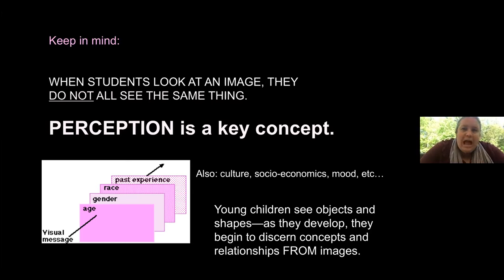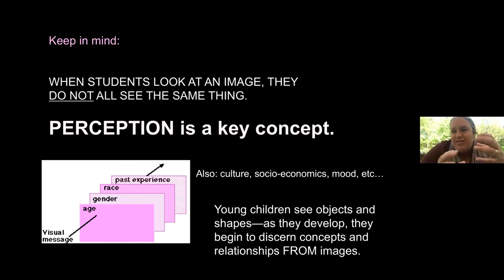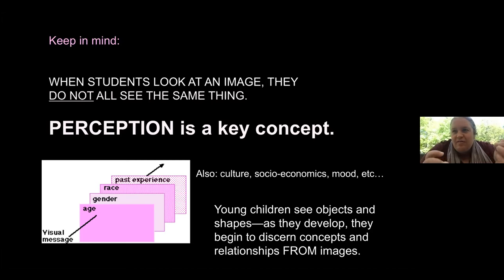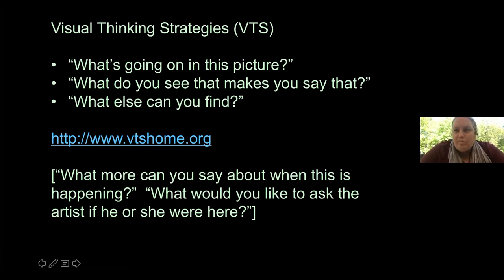As kids develop, they see objects, they see shapes, and then they begin to get concepts and relationships from images. Think about those early board books that you use with kids — shapes, textures, apple, banana, farm animals, tractors, trucks — the relationships that kids discern early on from these very simple concept things. We should start simple and kind of move more complex.